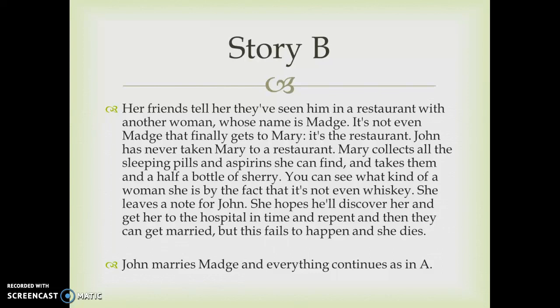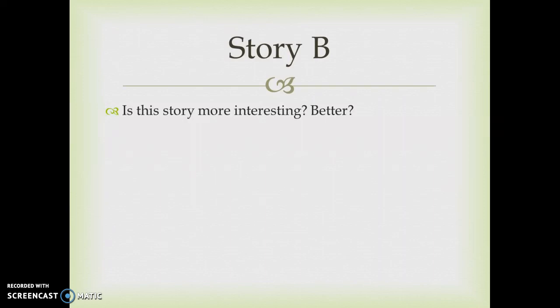Then it says John marries Madge and everything continues as in A. So we have the idea that John is going to continue like in story A and have a normal, nice life. But the first part of story B is far more interesting — one person feels strongly about the other but the feeling isn't returned. It creates what's called narrative tension, where you're wondering whether or not things will work out for the characters. Hopefully you sympathize with them and wonder how things will turn out. And then we have something tragic that happens: suicide. This creates tension, complications, and conflict in the story.